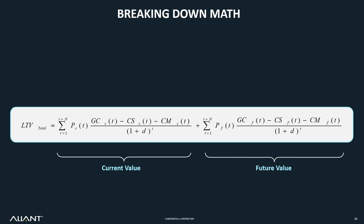Brandon and I had a little fight over who was going to get to show the formula — and I won. The formula really breaks down into current value and future value prediction. On the current value side, you're taking gross contribution minus cost to serve and cost of marketing. As Brandon said, start small and add over time — maybe you don't have the cost to serve immediately, so you'll use marketing cost and some margin contribution. You can always add in cost to serve later.